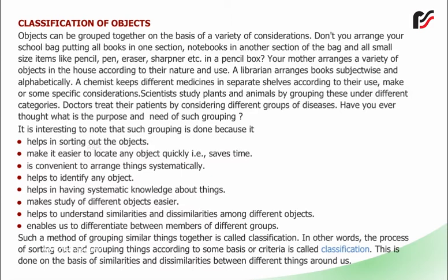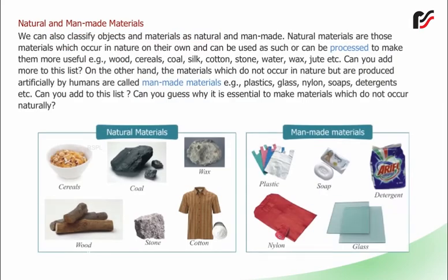Classification is done on the basis of similarities and dissimilarities between different things around us. We can also classify objects and materials as natural and man-made. Natural materials are those which occur in nature on their own and can be used as such or processed to make them more useful, e.g. wood, cereals, coal, silk, cotton, stone, water, wax, jute, etc. On the other hand, materials which do not occur in nature but are produced artificially by humans are called man-made materials, e.g. plastics, glass, nylon, soaps, detergents, etc. Can you guess why it is essential to make materials which do not occur naturally?